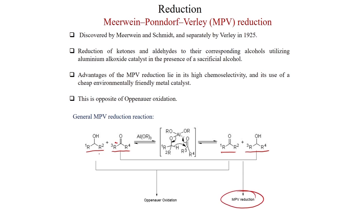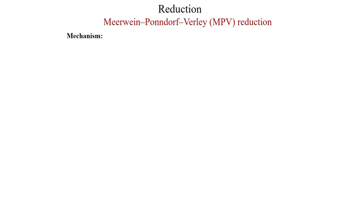On the other hand, the alcohol going to a ketone — this R1, R2 alcohol going to a ketone — is called Oppenauer oxidation. So this alcohol going to ketone is Oppenauer oxidation, and ketone going to alcohol is MPV reduction.